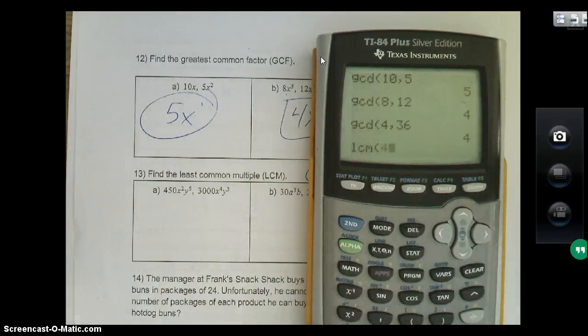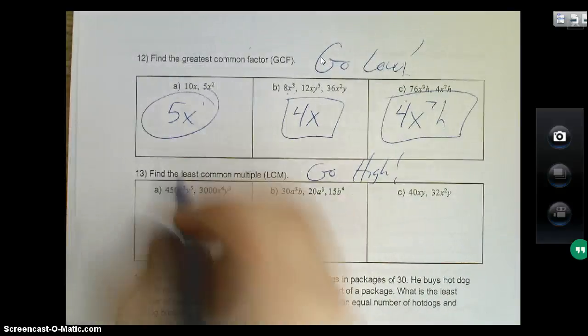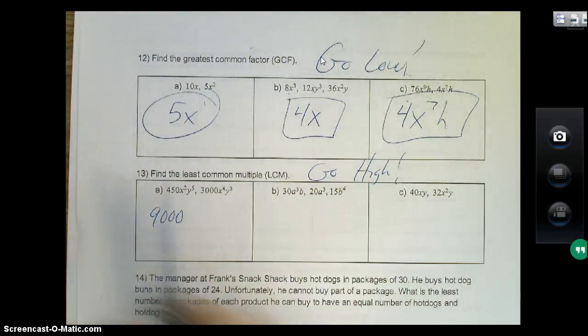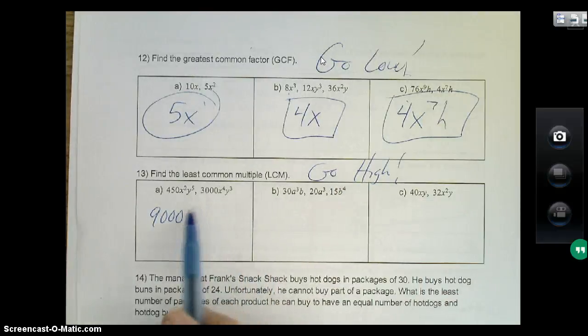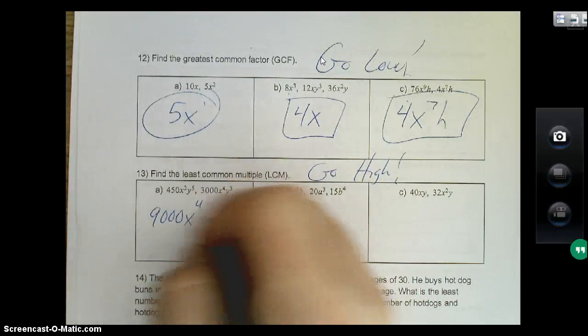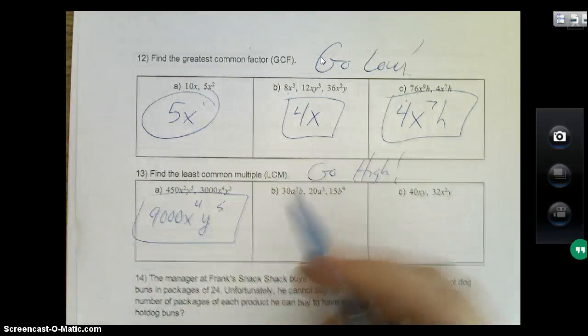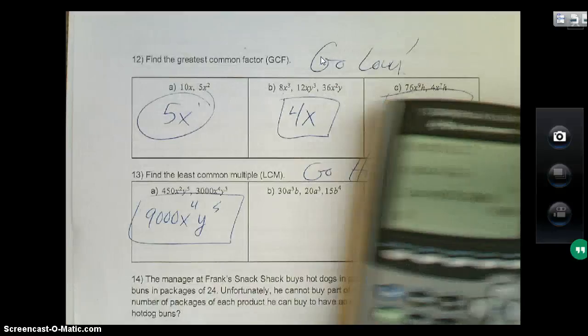LCM, same idea. Hitting math, go to the right, scroll down, here's your LCM. Number eight, we're typing 450 comma 3,000. Okay, so my LCM is 9,000—power levels over 9,000! All right, so then you're going high. You're finding x², x to the fourth, the high one is x to the fourth. y to the fifth, y to the third, the high one's y to the fifth. You just go high for LCM.